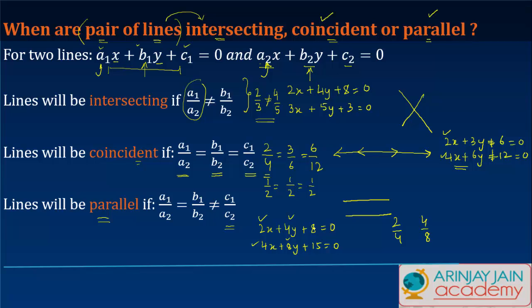Again, if I take a1/a2 = 2/4, b1/b2 = 4/8, c1/c2 = 8/15, while this equals 1/2 and this equals 1/2, this is not equal to 1/2. In other words, a1/a2 equals b1/b2 but is not equal to c1/c2, so these lines are parallel.